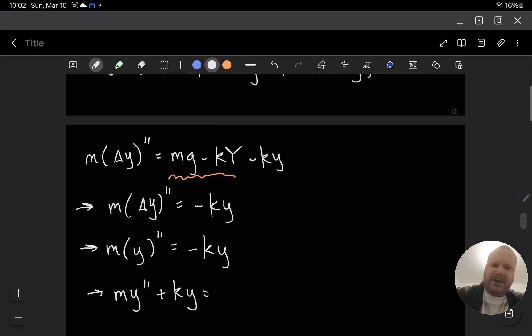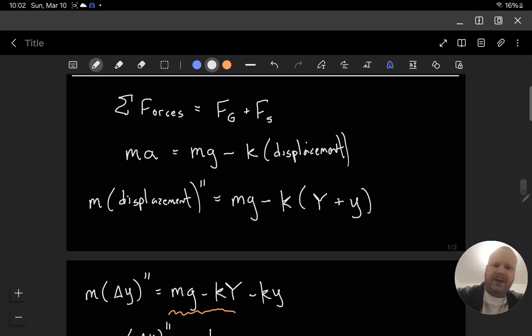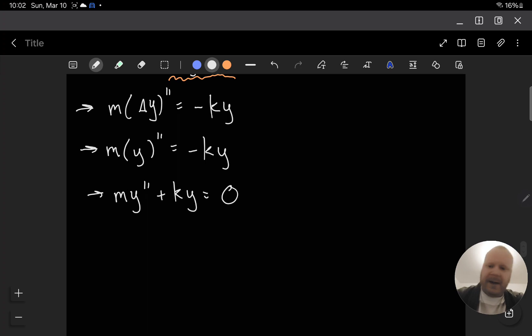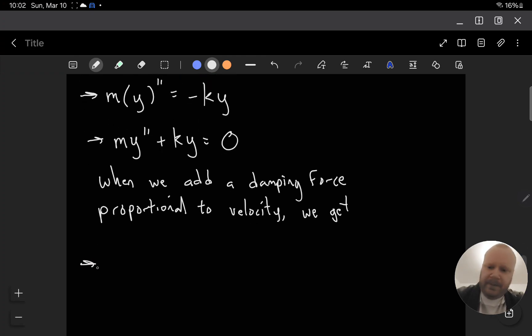This is the sum of these two forces, right? The force of gravity and the force of the spring. The return force on that. So when we add a damping force proportional to velocity, we get m Y double prime plus our damping force with the damping constant plus K Y is equal to zero.